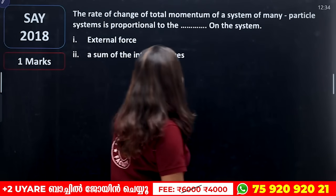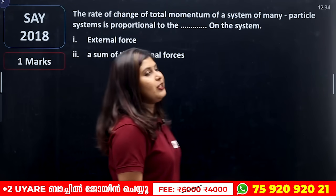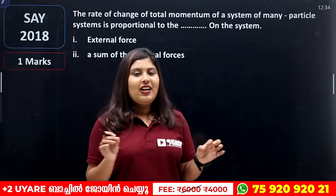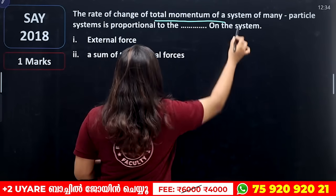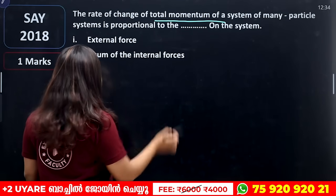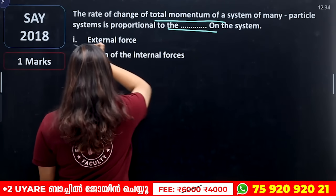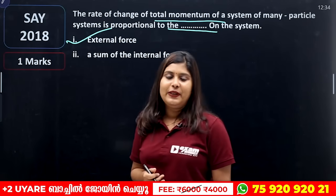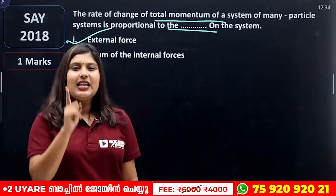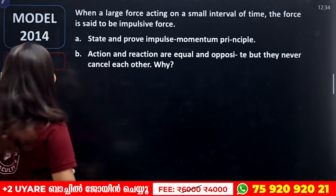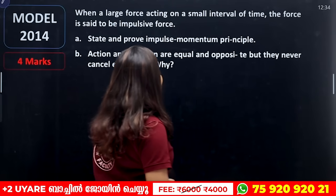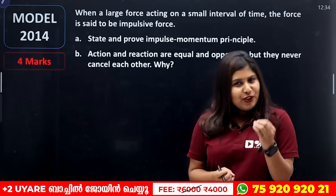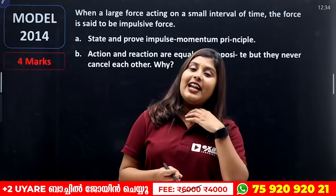The rate of change of total momentum of a system of many particles is proportional to the external force acting on it. This is actually the statement of Newton's second law — the rate of change of total momentum is proportional to the external force acting on the system.